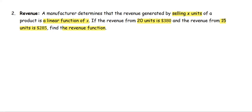From the key point here, we are going to find the revenue function, which is the function r of x. The function is linear, as stated in the information. That means r(x) will be in the form of a linear function, which is y equals mx plus b. So we write r(x) as m times x plus b.